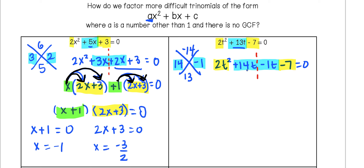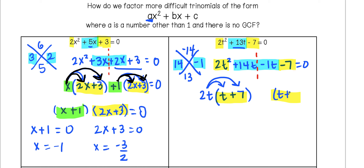Focusing on 2t squared and 14t, the GCF is 2t, leaving t plus 7 in the parentheses. Now the goal is to recreate that same t plus 7 on the other side. For negative 1t minus 7, we need to multiply t plus 7 by negative 1: negative 1 times t gives negative 1t, and negative 1 times positive 7 gives negative 7. That works.